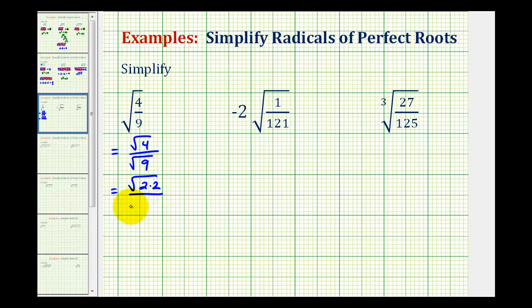And we could write the square root of 9 as the square root of 3 times 3. This just helps show that 4 is a perfect square because it's equal to 2 times 2, and 9 is a perfect square because it's equal to 3 times 3.